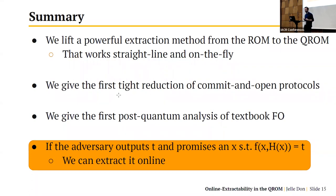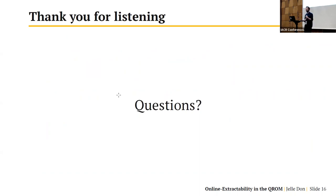Thanks for the talk. We have time for a few questions. Please come to the microphone so people on Zoom can hear. One question: is this not a general result — it only applies to specific applications like commitments and Fujisaki-Okamoto? Is there any hope for some construction that emulates an oracle usable generically for whatever application, perhaps via a Feistel transform or something similar? And separately, what about the common usage of random oracles for Fiat-Shamir non-interactive zero-knowledge proofs — have you looked at that or do you know of other work on quantum security there?